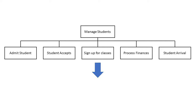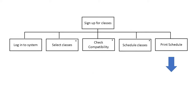Sign up for classes. Signing up for classes involves first logging in, selecting the classes, ensuring that the classes are compatible with each other and that they're valid for a degree or for initial studies, and that all the prerequisites for the classes are met. Then there is a scheduling process where the student may select among classes that are offered at multiple times. Finally, a schedule is printed.